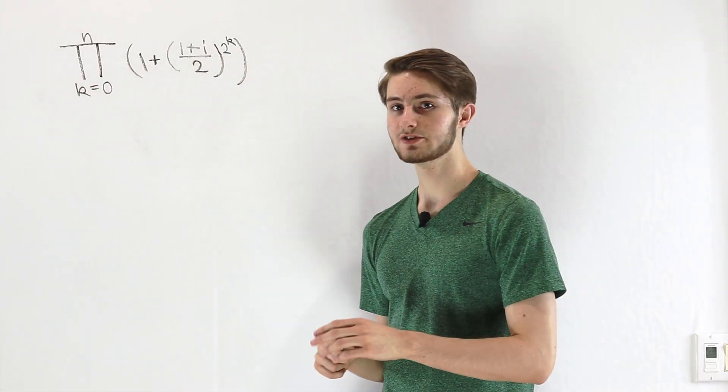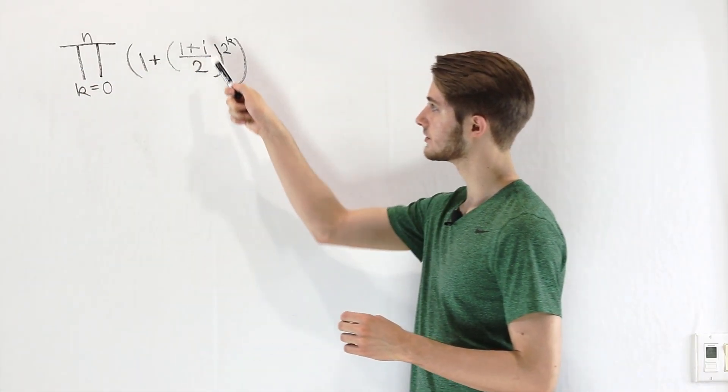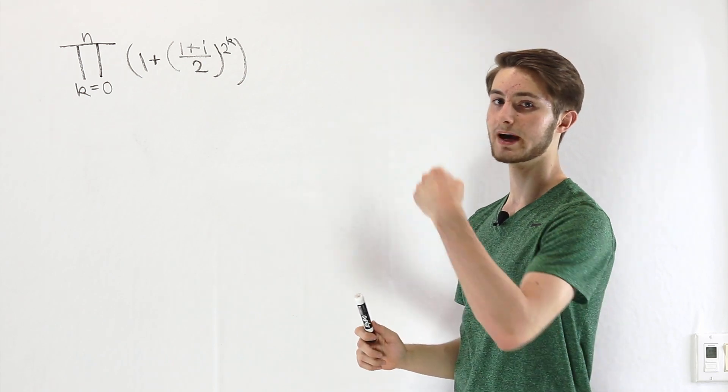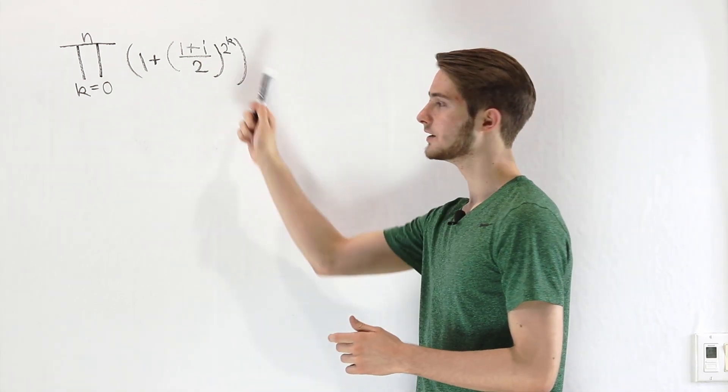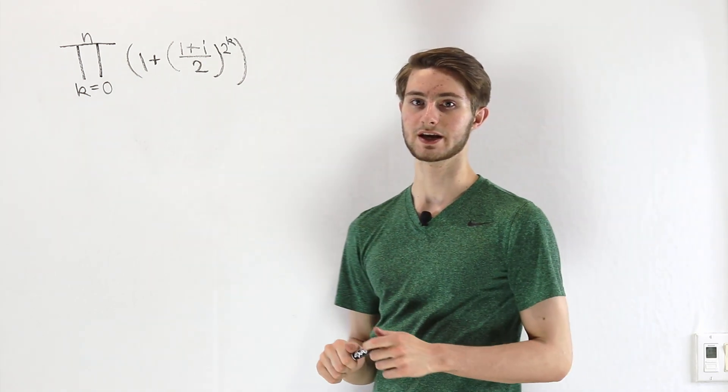So we are going to do the finite and infinite products of 1 plus (1 + i)/2 to the power of 2^k, where i is the square root of negative 1.